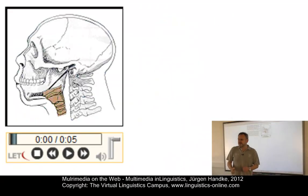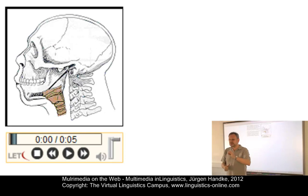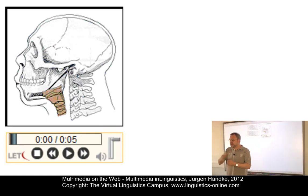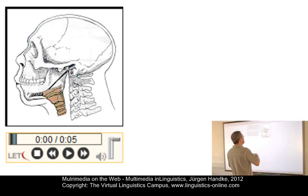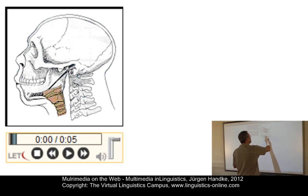The final example can be referred to as morphing, where a sequence of different pictures is played so fast that we perceive it as a simple animation sequence. This animation illustrates the descent of the larynx from Homo neandertalensis to Homo sapiens.